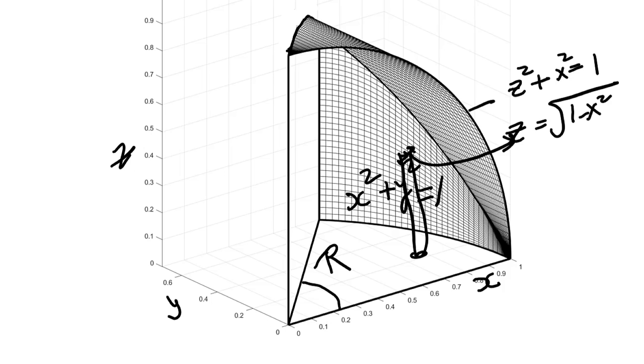So our integral will be set up as the double integral over r of z, that is square root of one minus x square, dA.